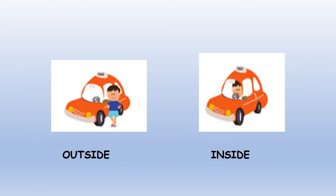Kids, here you can see two pictures. In the first picture, you can see a car and a boy. Here the boy is standing outside the car. And in this picture, the boy is sitting inside the car. Here boy is standing outside. Here boy is sitting inside. Outside. Inside.